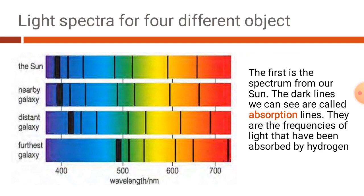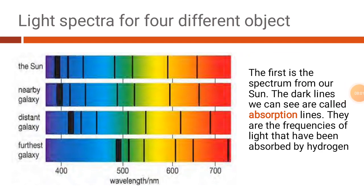Just like how the frequency shifts in sound, the light spectra also shift between different colors. This slide shows four different spectra of light belonging to different kinds of stars. These are the four different light spectra of different stars.